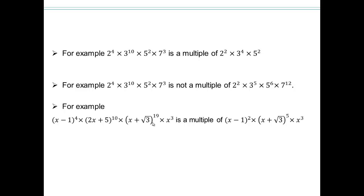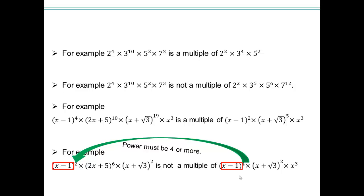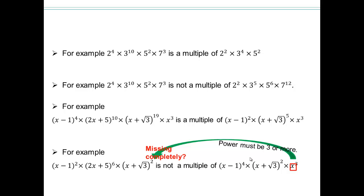How come this polynomial is NOT a multiple of that one? Looking at (x−1): it's present in both, but we need power 4 or more, and we only have power 2 — not enough. We need 4 or more (x−1)'s multiplied together. Additionally, x is completely missing from the first polynomial. So there's no hope of it being a multiple. In order to be a multiple, each factor must be present with at least the minimum required power.